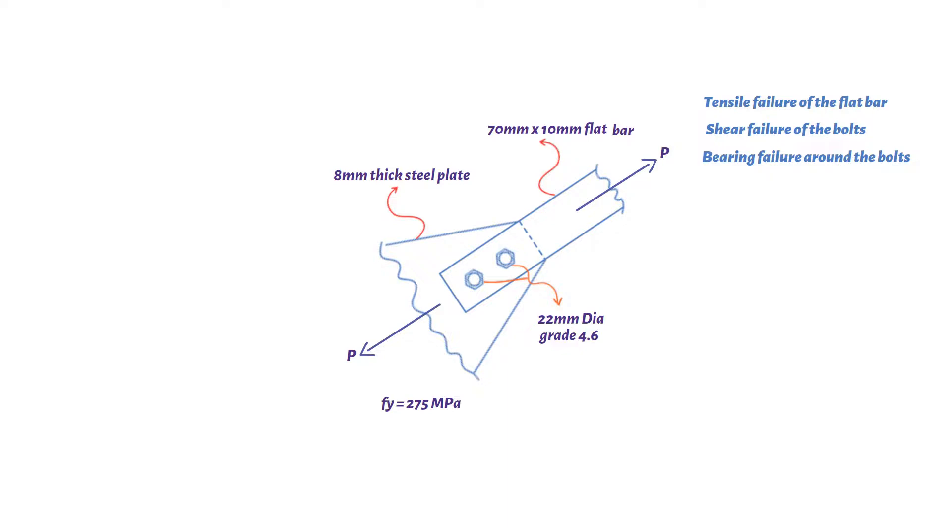To achieve this, we need to use the following equations. First equation is gross area, which is equal or greater than design tensile force multiplied by partial safety factor, which is 1 divided by characteristic yield strength.